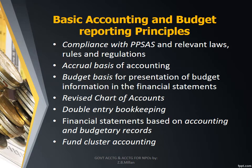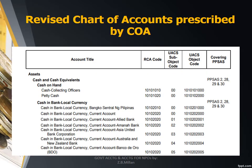The revised chart of accounts prescribed by the Commission on Audit is basically a listing of account names and a 10-digit account number. The 10-digit account number is arrived at by combining the 8-digit RCA code, or Revised Chart of Accounts code, and the 2-digit Unified Account Code Structure sub-object code.